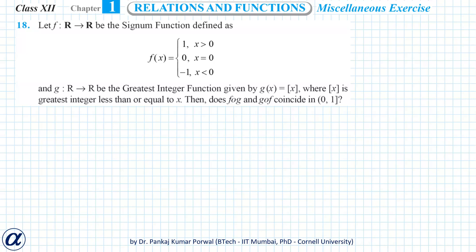In this question we are given two functions. The first function f is from R to R and is the signum function, defined as f(x) equals 1 for all x greater than 0, f(x) equals 0 when x equals 0, and f(x) equals minus 1 for x less than 0. The second function g is also from R to R, defined as g(x) equals the greatest integer of x, where the greatest integer of x is the greatest integer less than or equal to x.